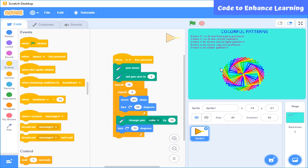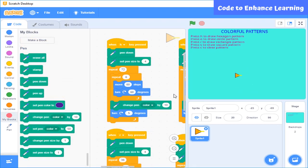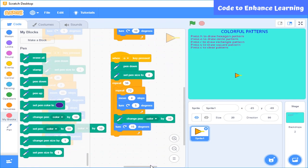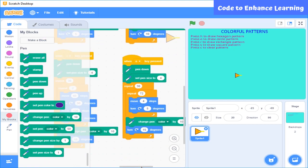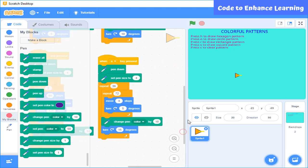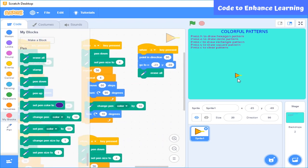As you can see this is the code to draw square pattern. Like this, we can write code for different colorful patterns. So these are the code for different colorful patterns. This is the code for hexagon pattern. This is the code for square pattern. This is the code for circle pattern. This is the code for rectangle pattern. And this is the code for clearing the screen or erasing the pattern drawn with putting the sprite in its original position.